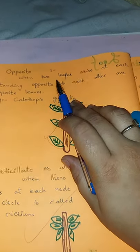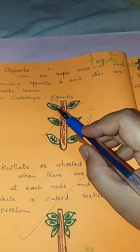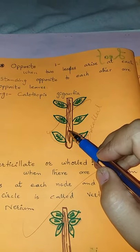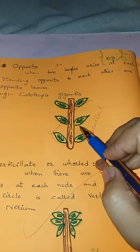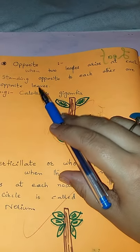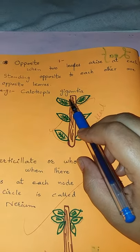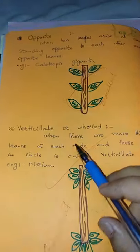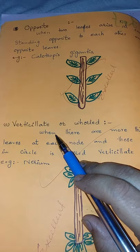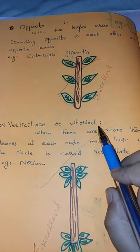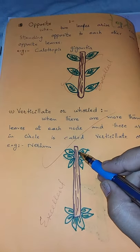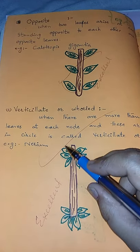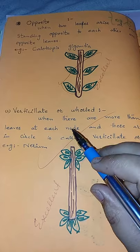Another phyllotaxis type is opposite, where two leaves are arranged opposite each other at each node. There is also the verticillate type, where bundles of leaves arise at each node. Both opposite and verticillate are distinct types of phyllotaxis.